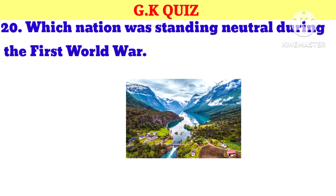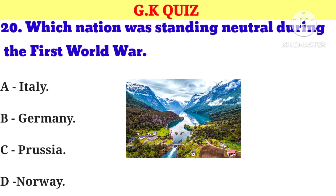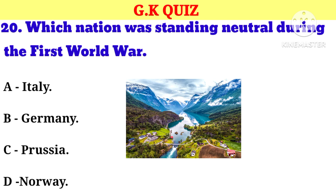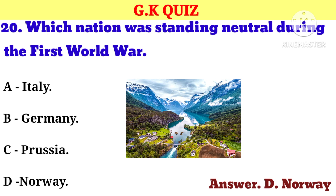Question number 20. Which nation remained neutral during the First World War? Your options: A. Italy, B. Germany, C. Prussia, D. Norway. And the correct answer is D. Norway.